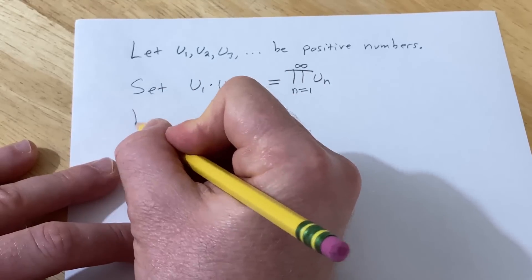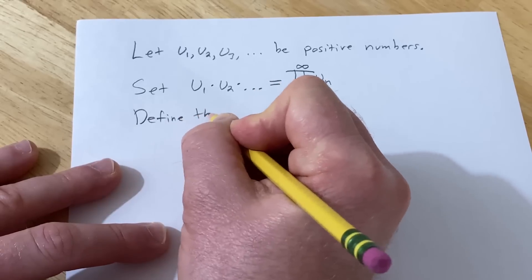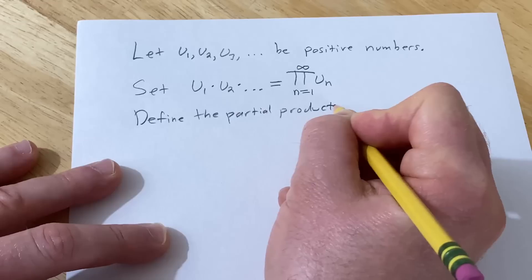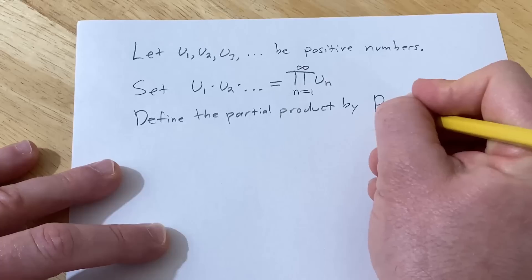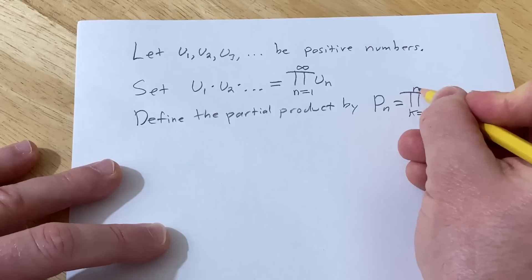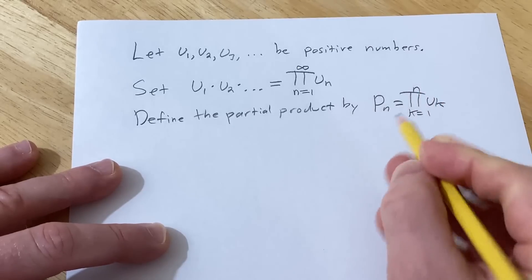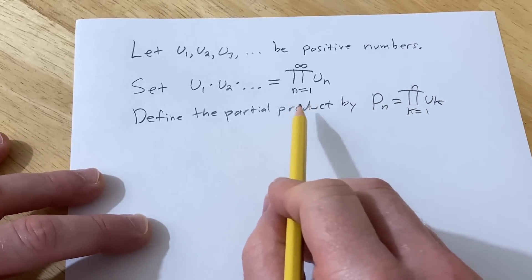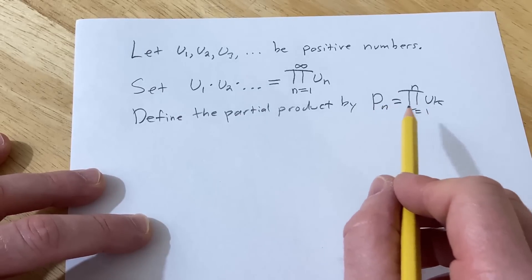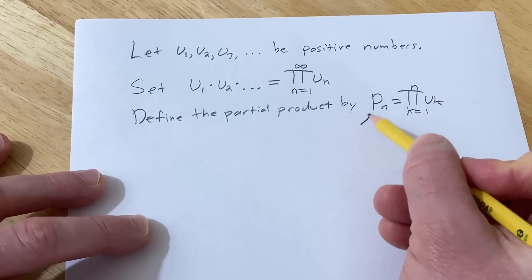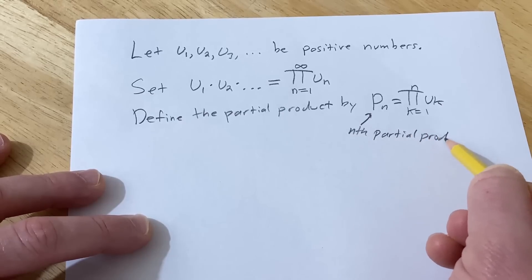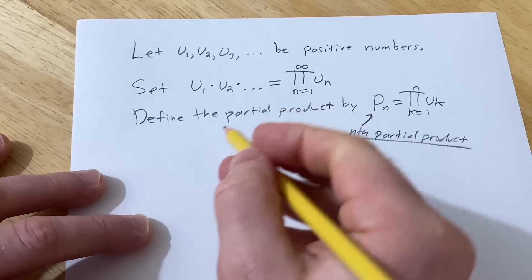Now what we're going to do is define the partial product by the following. So p_n is equal to π where k runs from 1 to n u_k. And so if you had calculus 2 this might seem really familiar. In calculus you study infinite series and when you have an infinite sum you look at the nth partial sum. Well this one here this is called the nth partial product. Okay that's the name that this is given. Nth partial product.